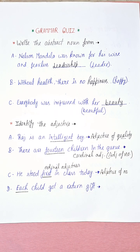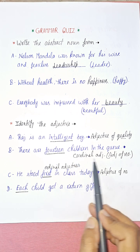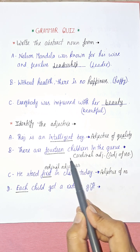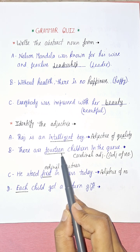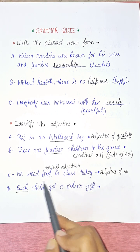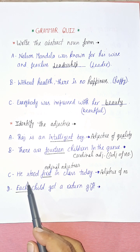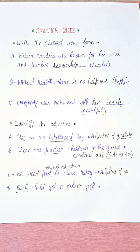So your counting adjectives — one, two, three, four, five, six, seven, eight, nine, ten, fourteen, fifteen — are all cardinal adjectives. Both cardinal and ordinal are adjectives of number. Cardinal adjective shows how many, and ordinal adjective shows the order. So 'he stood first in class today' — 'first' is your ordinal adjective.